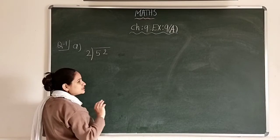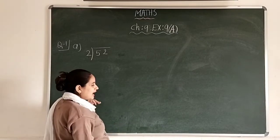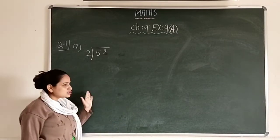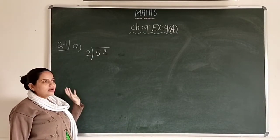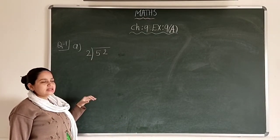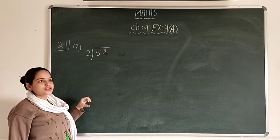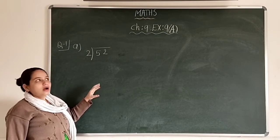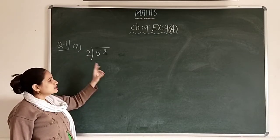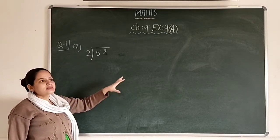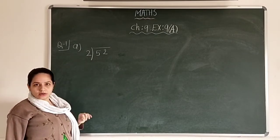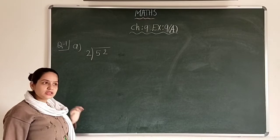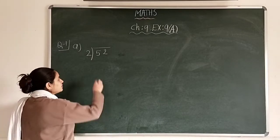We have to first divide and then we have to check also — whether dividend is equal to quotient into divisor plus remainder is happening or not, that we have to check.